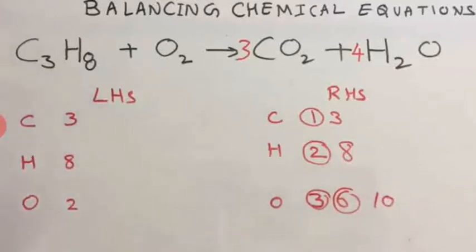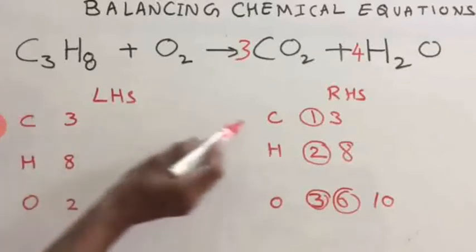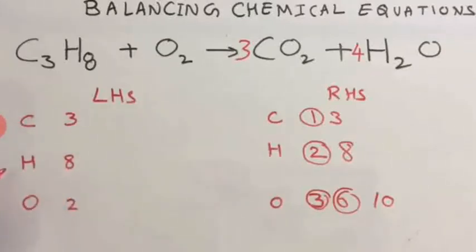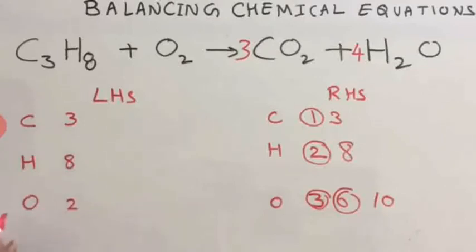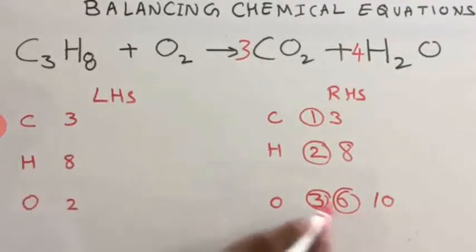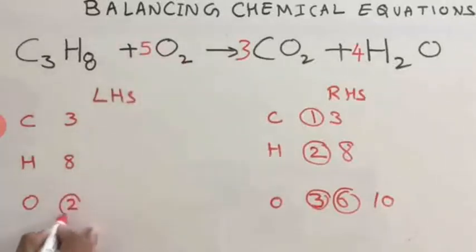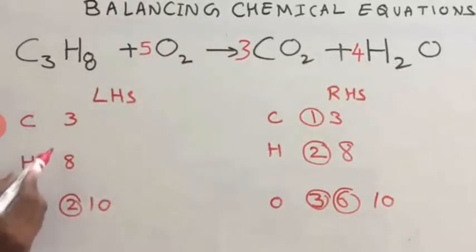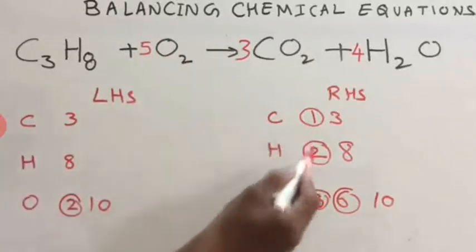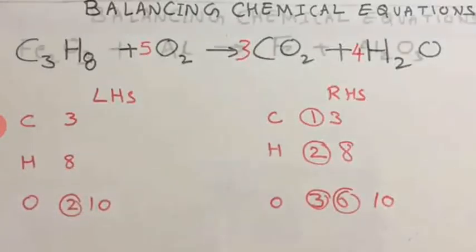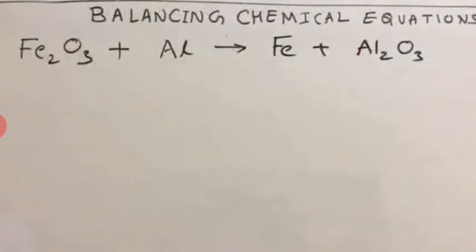Now compare. Carbon: you have 3 on LHS, 3 on RHS — balanced. Hydrogen: you have 8 on LHS, 8 on RHS — balanced. But oxygen you have 2 on LHS and 10 on RHS. So simply multiply with 5 — 5 twos are 10. Check: 3, 8, 10 on both sides. So your equation is balanced. Now let us balance one more equation.